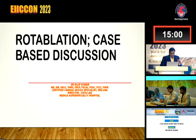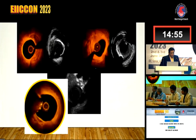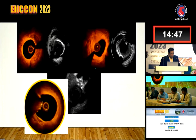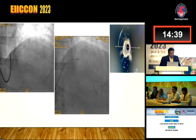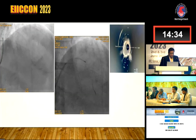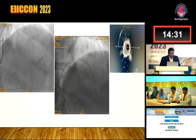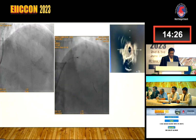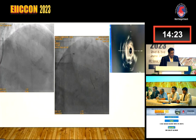My topic is rotablation case-based discussions. Of late we have been seeing calcium, recognizing calcium, what's there inside the coronary artery and dealing with that. This was a case when I was doing an acute entry LMI STEMI and nothing was going in after a 1.5mm balloon. To our surprise, this patient had a very severely calcified lesion and I had to take rotablation in acute LMI.